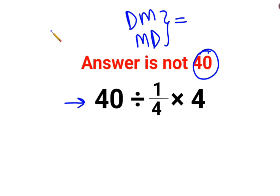So now in such cases, what should we do? Here we just have to always go from left to right, meaning whatever operation comes from your left-hand side has to be done first. So here we have 40 divided by 1/4.